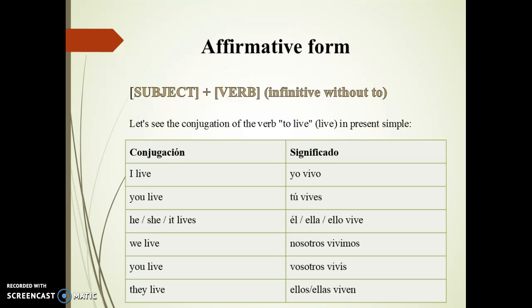Let's see the conjugation of the verb 'to live' in present simple. In this case, we get the next pronouns: I, you, he, she, it, we, you, they — plus bare — live.